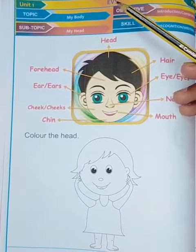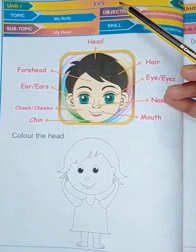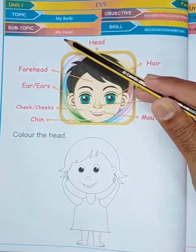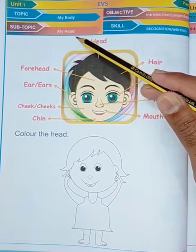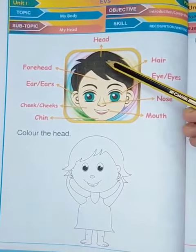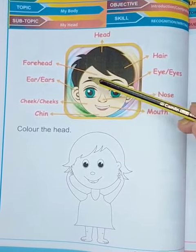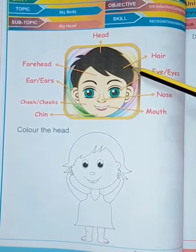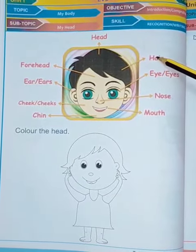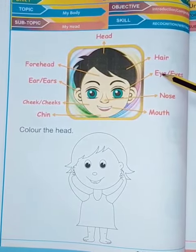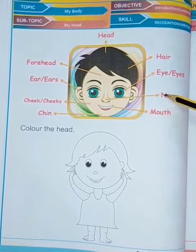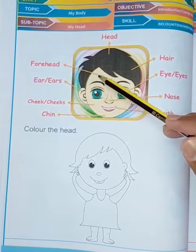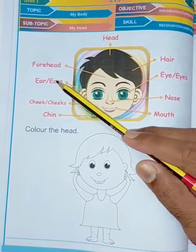Hello kids! Today's subject is EBS part 14. Today's topic is 'My Body.' We are going to learn about my head. This is our head, and we have some body parts related to it: hair, eyes, nose, mouth, forehead, and ears.